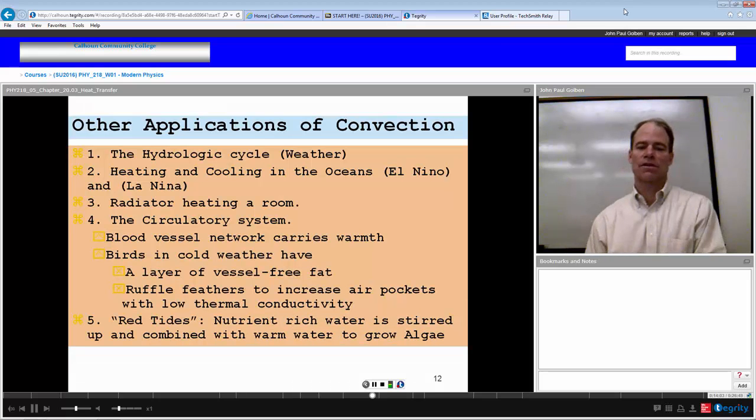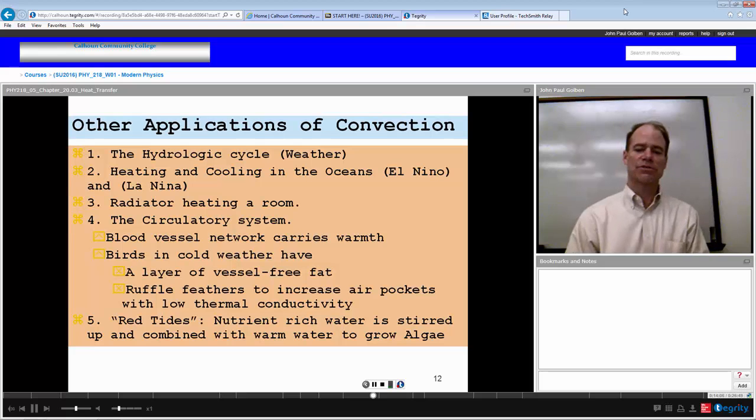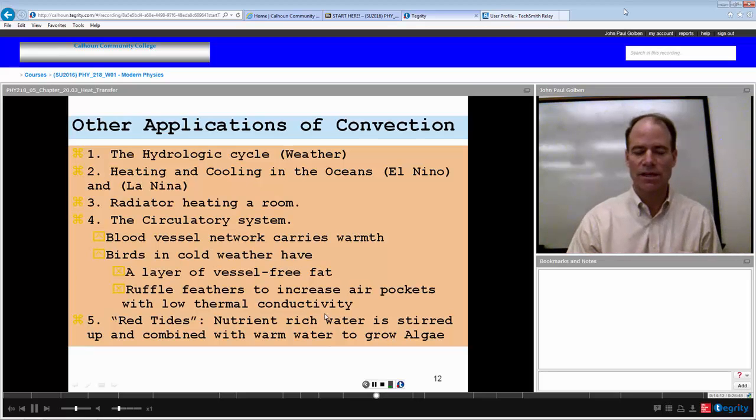And then another example, convection: red tides. Nutrient-rich water is stirred up, combines with warm water and grows algae, which causes the red action within the red tides. So these are all examples of convection.